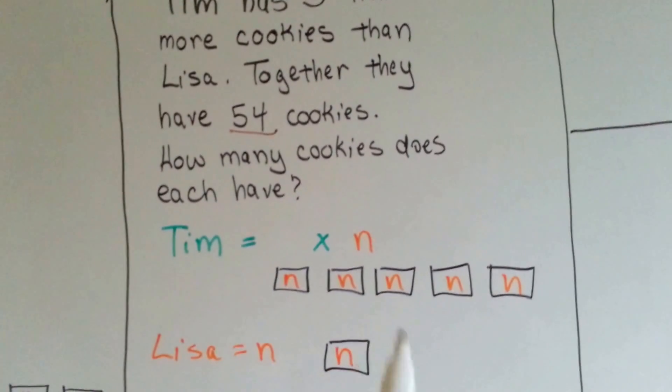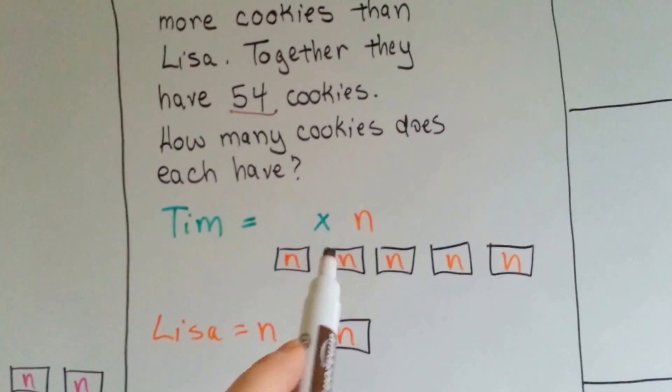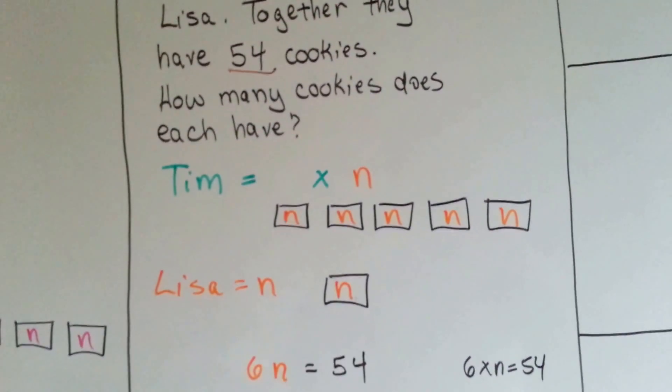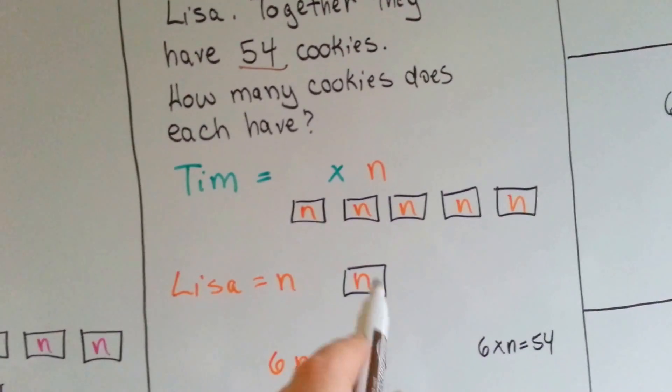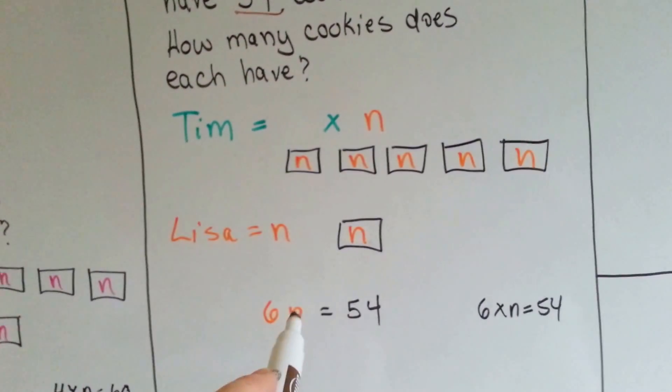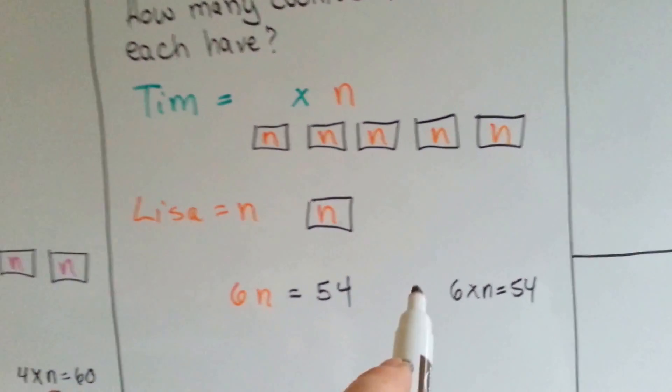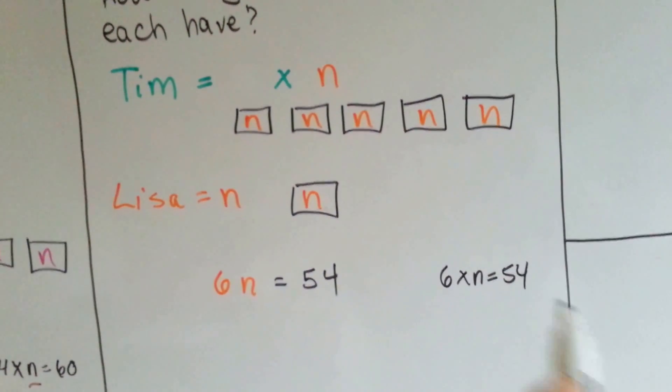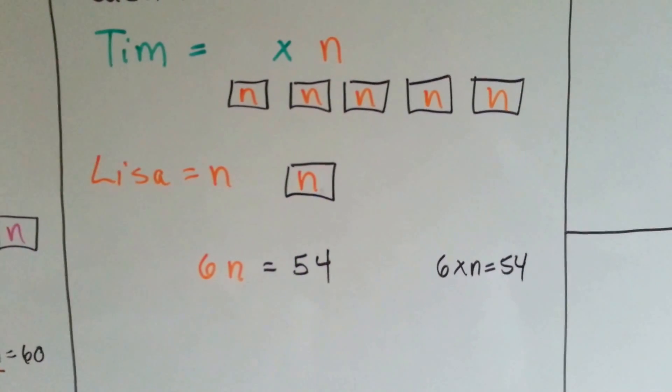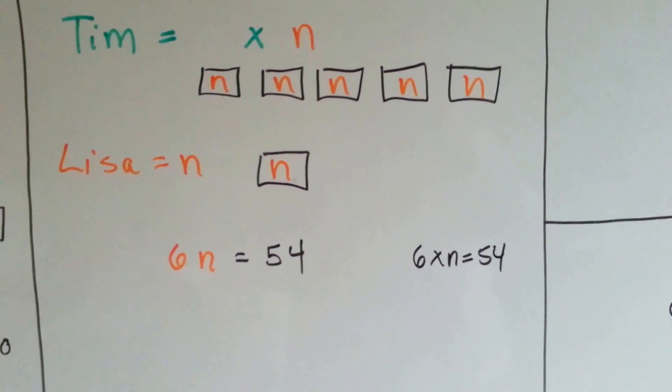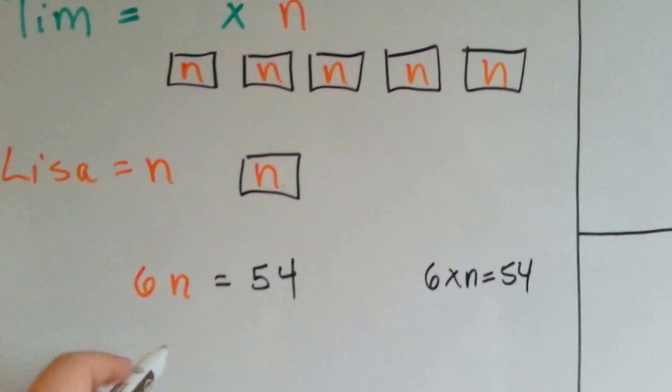Tim has got five. Lisa's only got one. See? Because he's got five times more. So, it gives us a total of one, two, three, four, five, six n's. Six n equals fifty-four. Six times n equals fifty-four. Do you know your six times table? Six times what is fifty-four? Do you know? Six times nine.